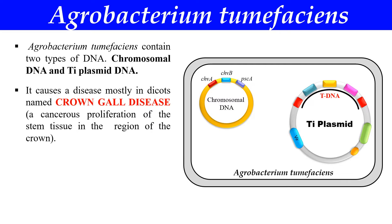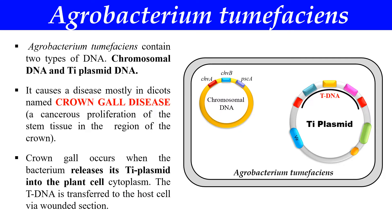This bacteria causes the Crown Gall disease. In Crown Gall disease, there is a formation of cancer — it is a kind of cancer which generally occurs in plants. There is cancerous proliferation of stem tissue in the region of the crown. This Crown Gall disease usually occurs when the Ti Plasmid is transferred to the plant, because this Ti Plasmid contains the genes for the formation of Crown Galls. That is why this plasmid is named Tumor Inducing Plasmid.